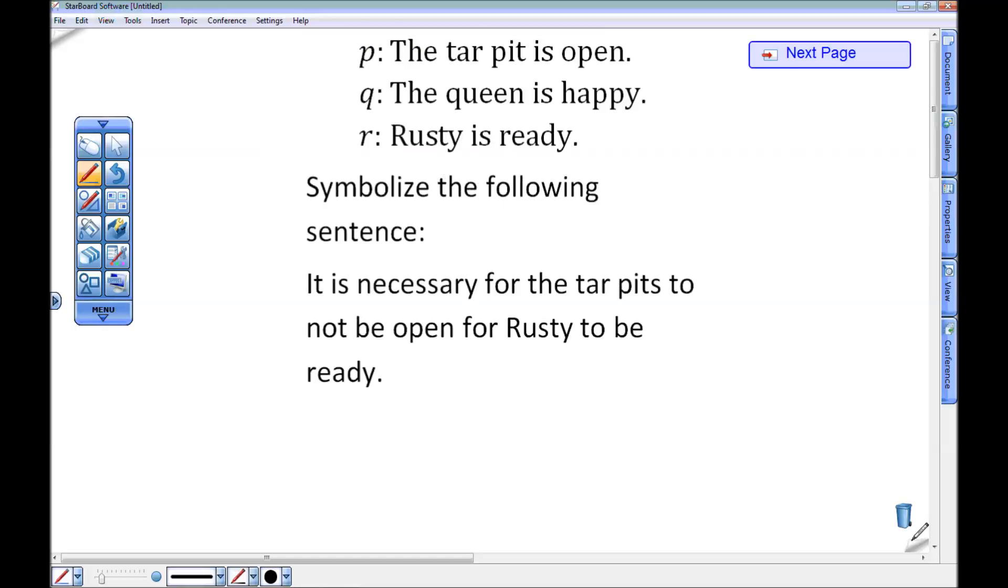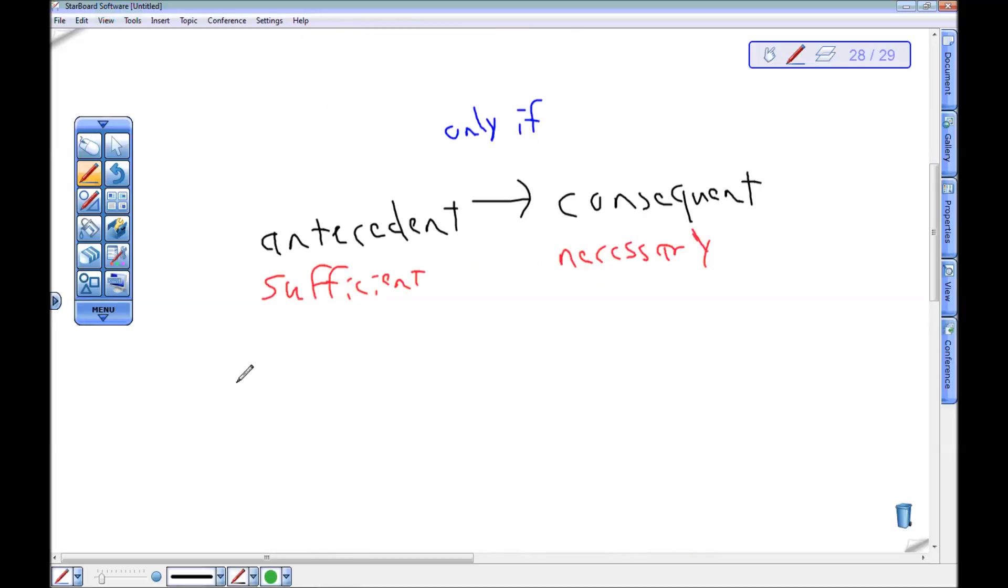It is necessary for the tar pits to not be open for Rusty to be ready. Okay, let's tease out our pieces here first, but that looks like one of those weird ones. So the tar pits to not be open is not P. Rusty to be ready is R, so I know in my head this is either going to be if not P then R or if R then not P. And the way that I can figure that out is I go back to this little picture in my head. Okay, I've got my antecedent, my arrow, my consequent. On the top I have only if. Underneath antecedent I have sufficient. Underneath consequent I have necessary.